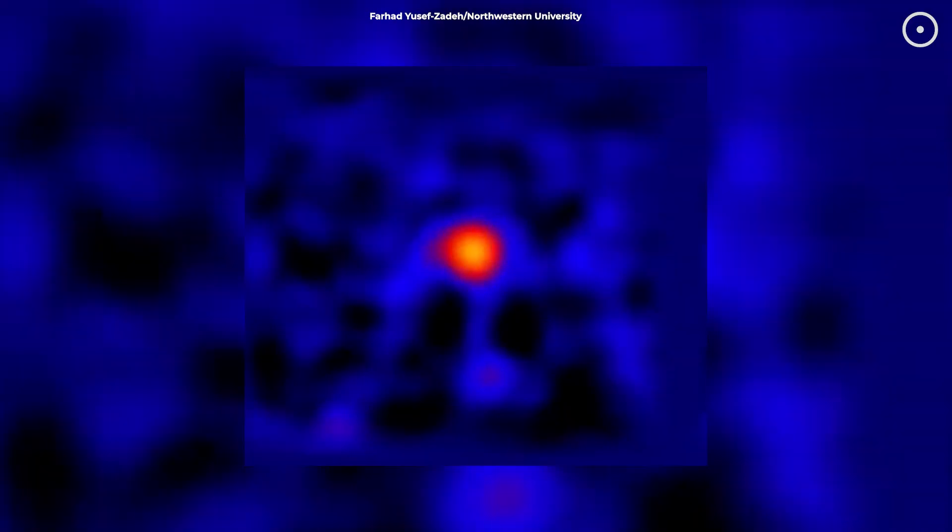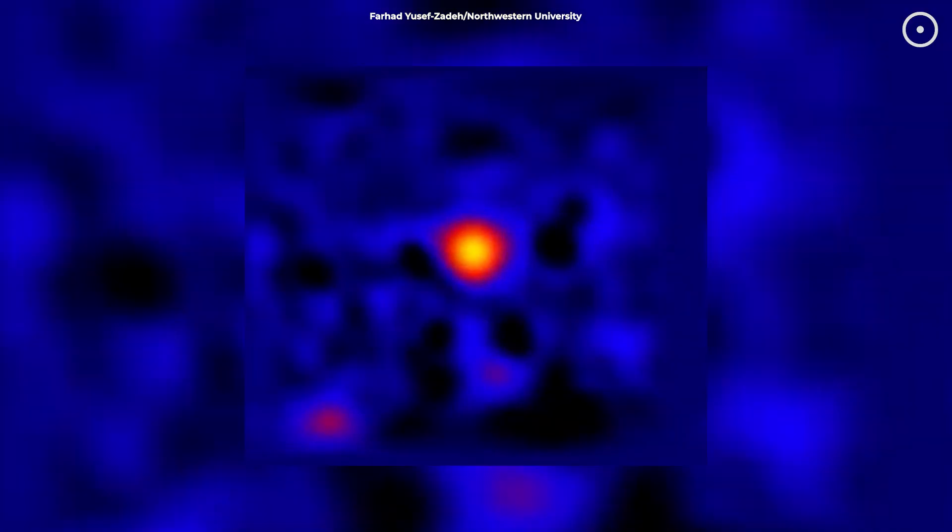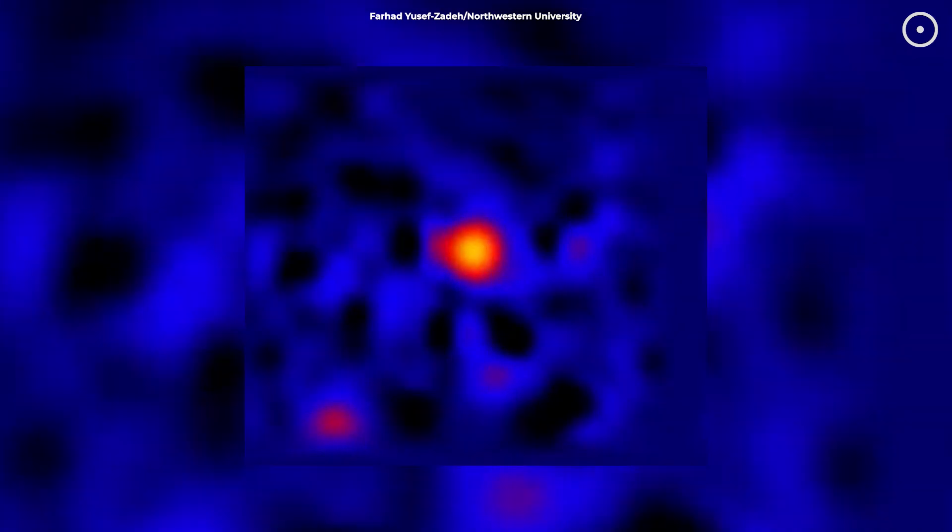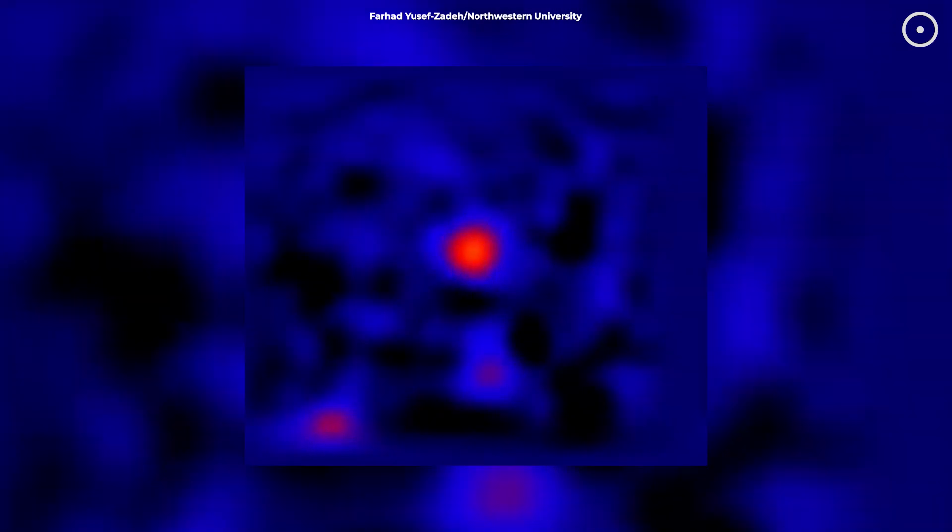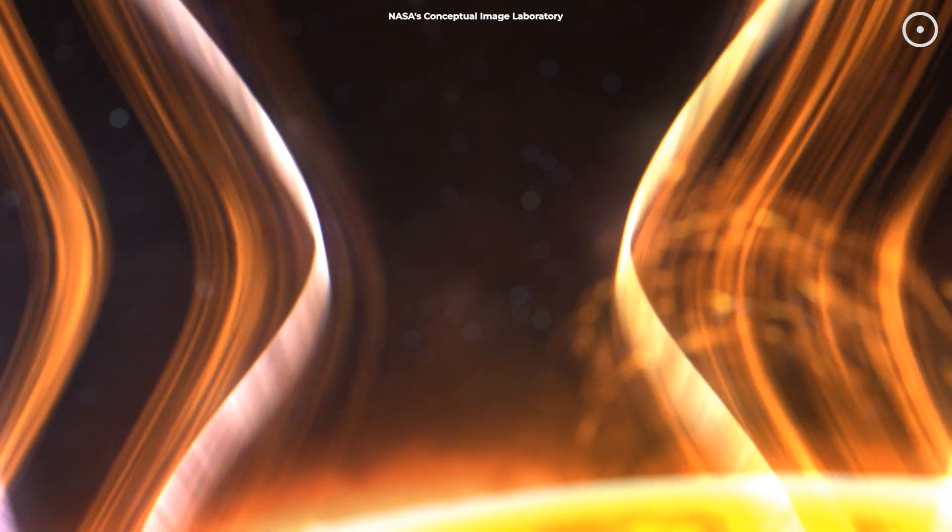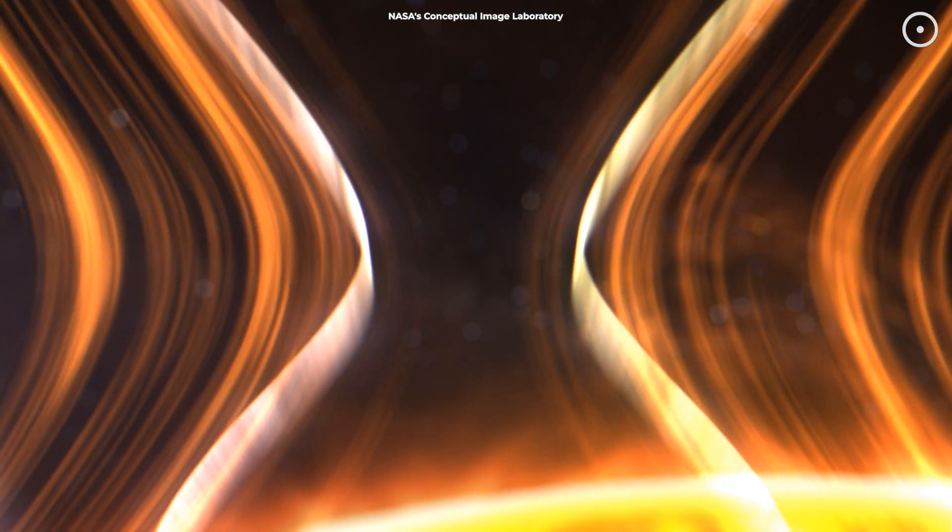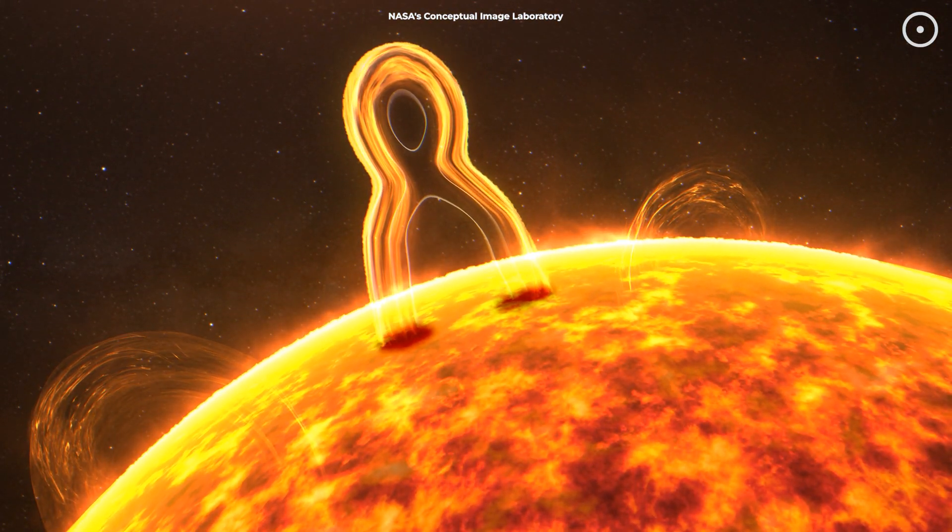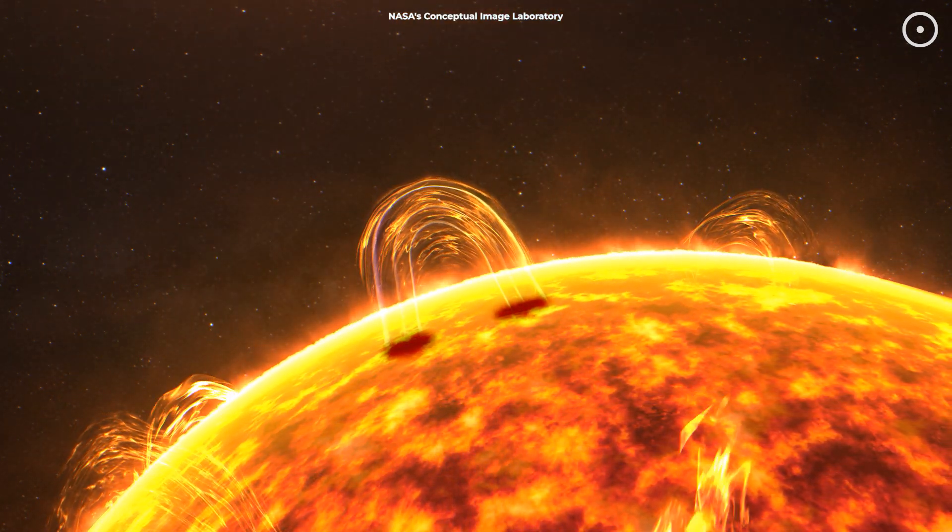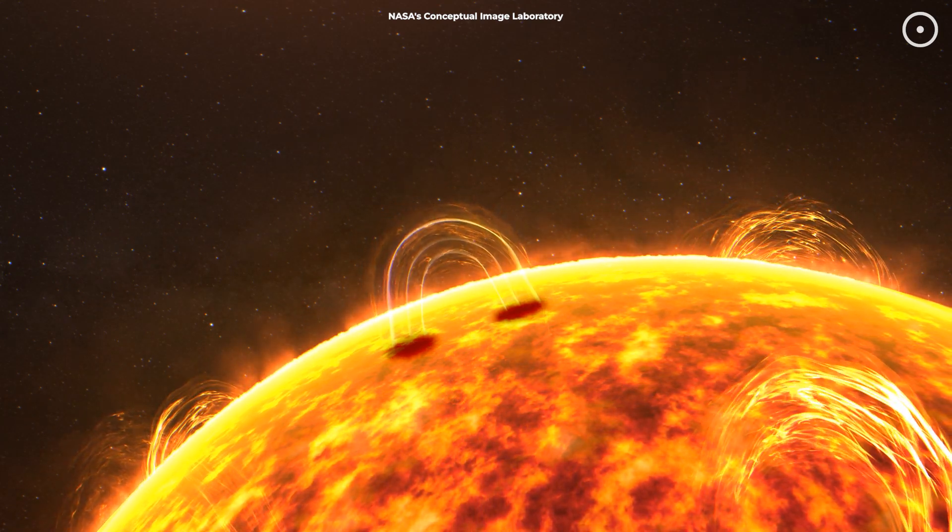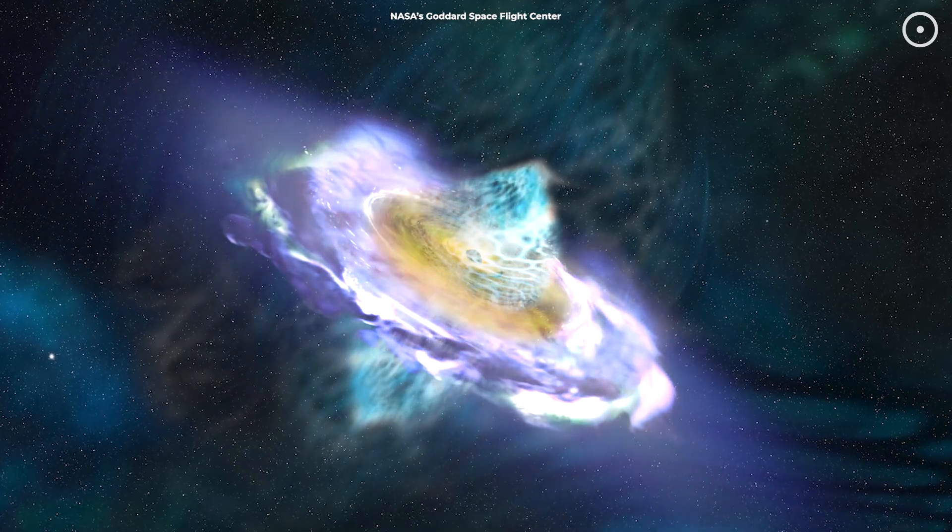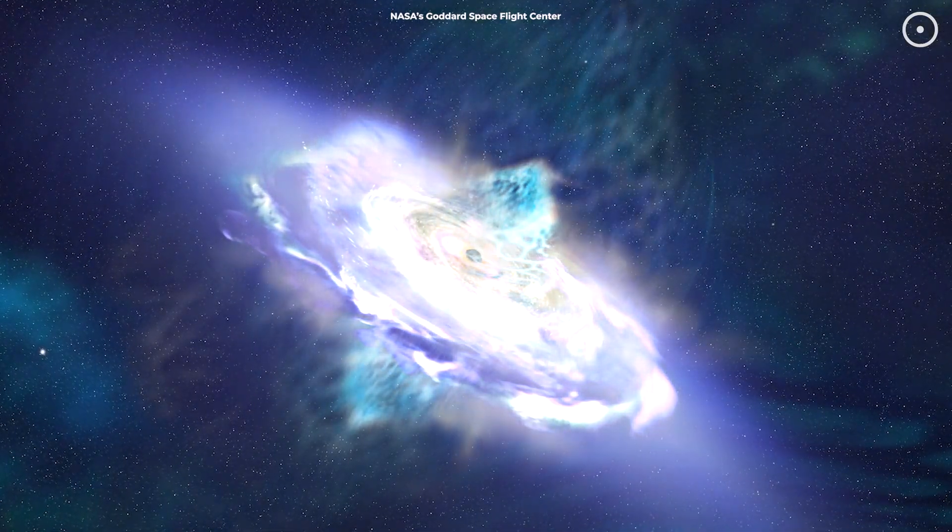Scientists think they've figured out what's causing those three different types of flares, and it's all coming down to two main processes. Let's start with those quick flickers. They're actually caused by something surprisingly similar to what happens on our sun. When you look at the sun through special telescopes, you can see solar flares erupting from its surface. These happen when magnetic fields on the sun get twisted and snap, like a rubber band that's been stretched too far.